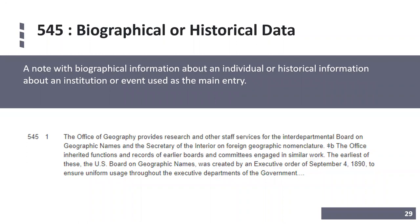Field 545 is the biographical or historical data — a note with biographical information about an individual or historical information about an institution or event used as the main entry. First indicator 0 indicates a biographical sketch, first indicator 1 indicates an administrative history, and a blank first indicator means no information has been provided. When no distinction between levels of detail is required, subfield A contains all of the text; when a distinction is appropriate, subfield A contains a brief statement and subfield B contains additional information.